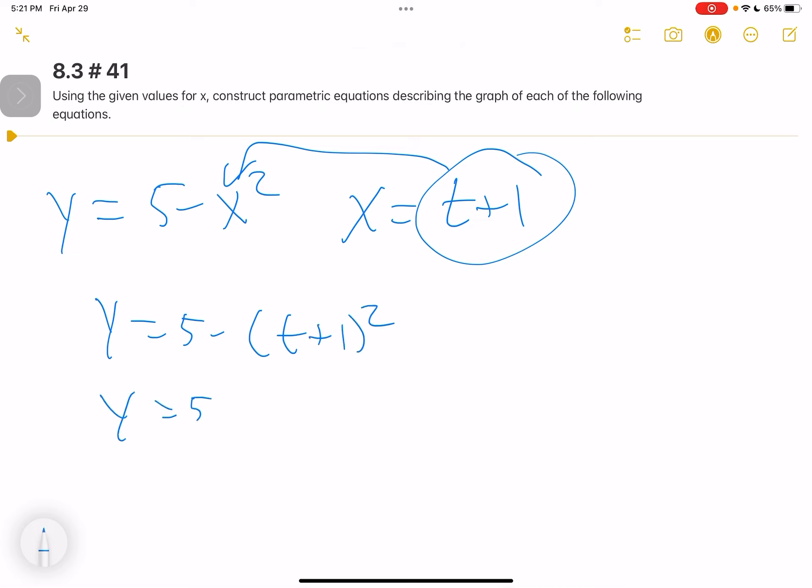So y equals 5 minus quantity t squared plus 2t plus 1. So y equals 5 minus t squared, distribute the negative, minus 2t minus 1.